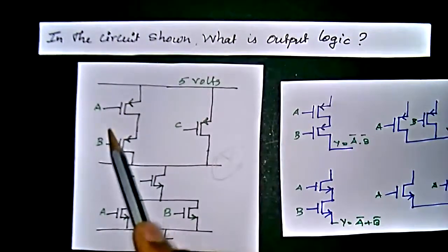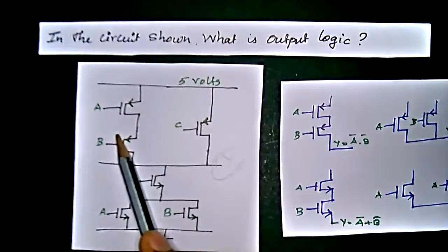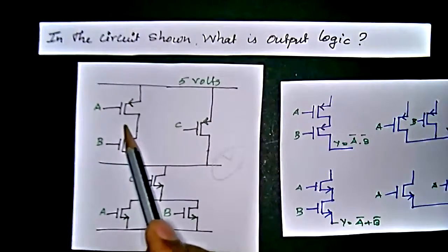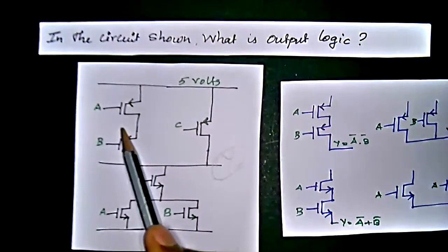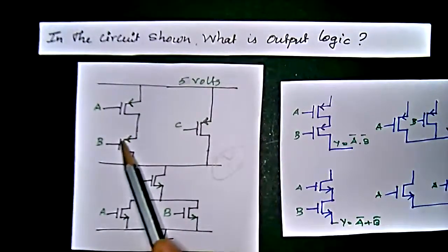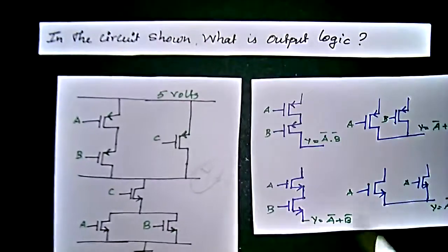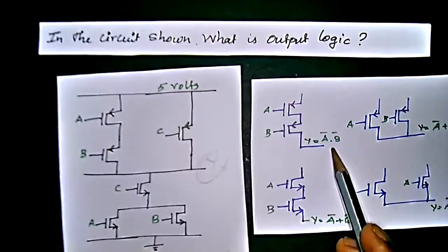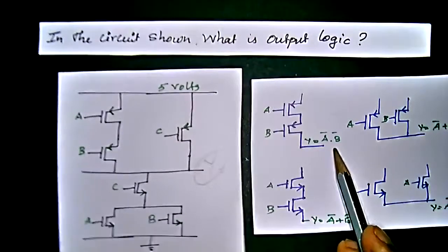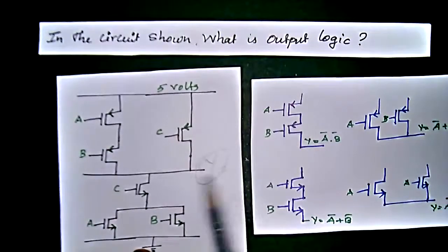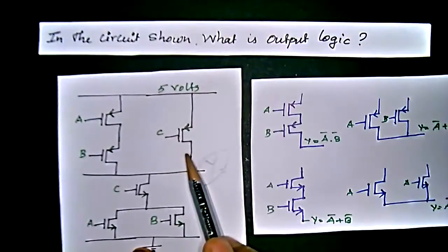So here we have the two things, two PMOS which is in open, that is in series connection. So in series connection meaning we will get A bar into B bar. That is A bar, B bar plus C bar because in parallel.